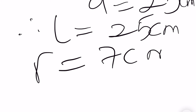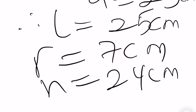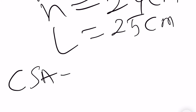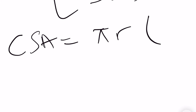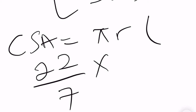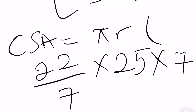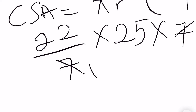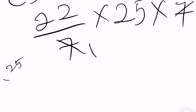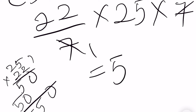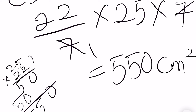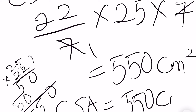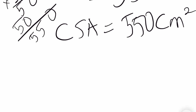So we have our R to be 7 centimeters, our H to be 24 centimeters, and our L to be 25 centimeters. For the CSA, we have it to be pi R L. Then we have our pi to be 22 over 7, so we have 22 over 7 times 7 times 25. The 7s cancel, giving us 22 times 25, which is 550 centimeters squared. So our curved surface area is 550 centimeters squared.